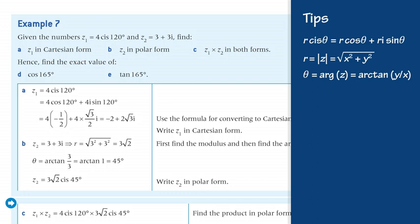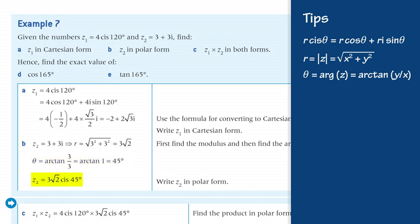To write the second complex number in polar form, use its Cartesian coordinates to calculate the modulus and argument. z₂ = 3 + 3i implies r = √(3² + 3²) = 3√2, and θ = arctan(3/3) = arctan(1) = 45°. Therefore z₂ = 3√2∠45°.